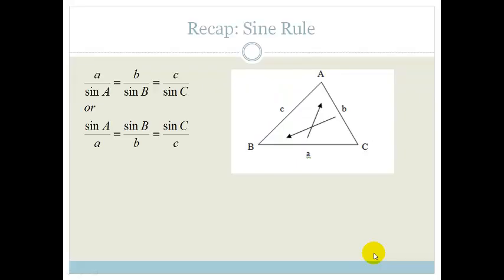So first of all, just a recap on your sine rule. Your sine rule states that a over sin A equals b over sin B equals c over sin C, or remember it's reversible, sin A over a equals sin B over b equals sin C over c. And remember, when you're talking about A and little a and big A, then big A is your angle and your little a is the side that's opposite to it. So that is the sine rule.